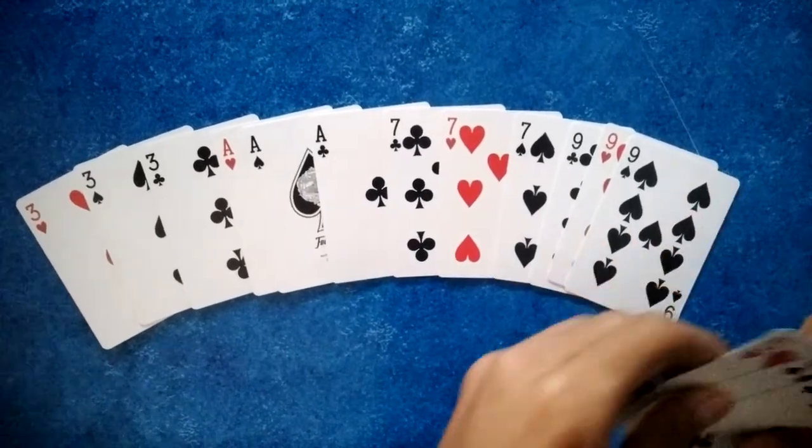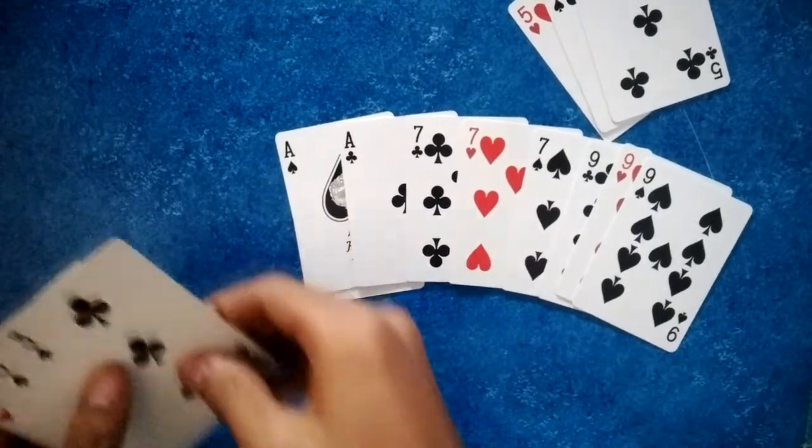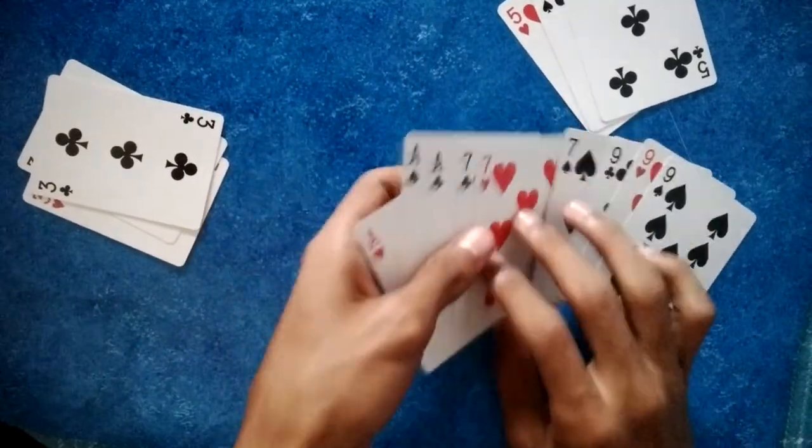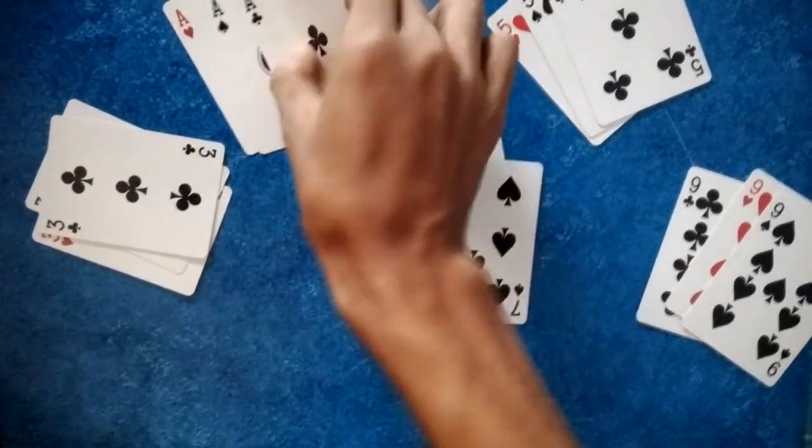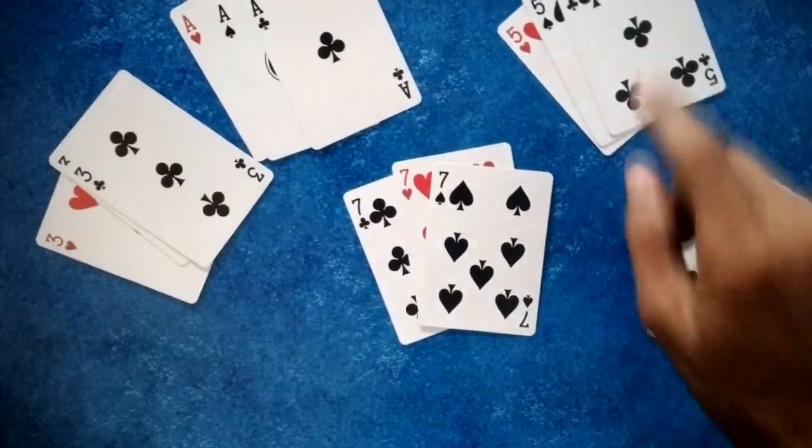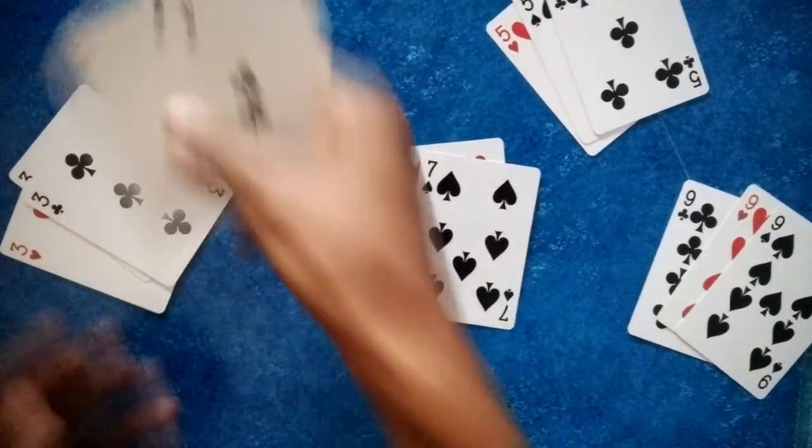So as you can see, we have here 15 cards. The first cards are not chosen randomly. We have here the aces, the 3s, the 5s, the 7s, and the 9s. So we have ace of clubs,